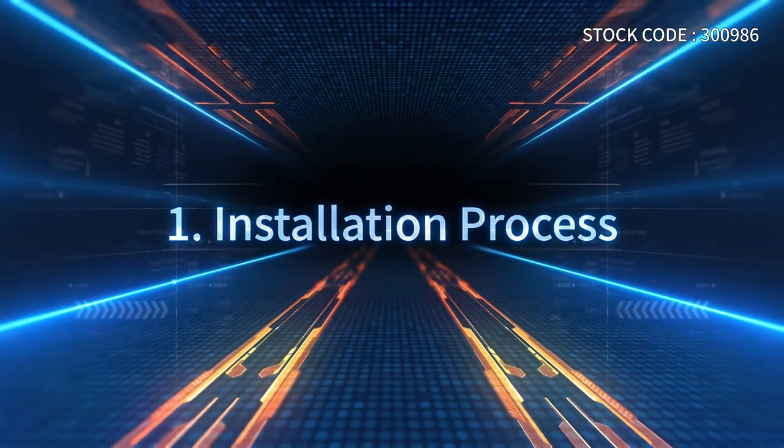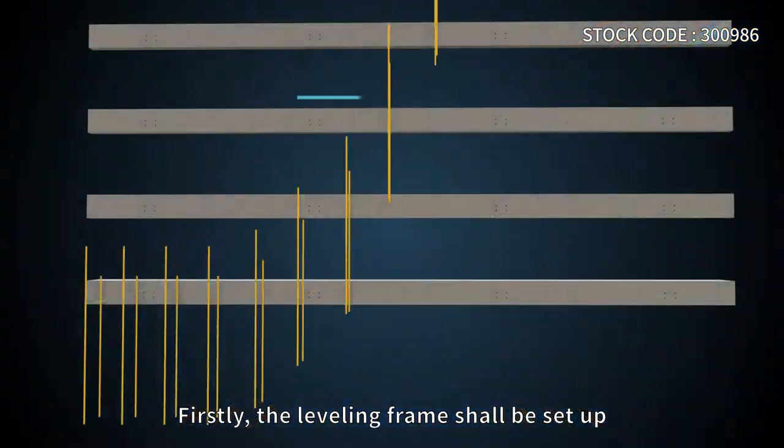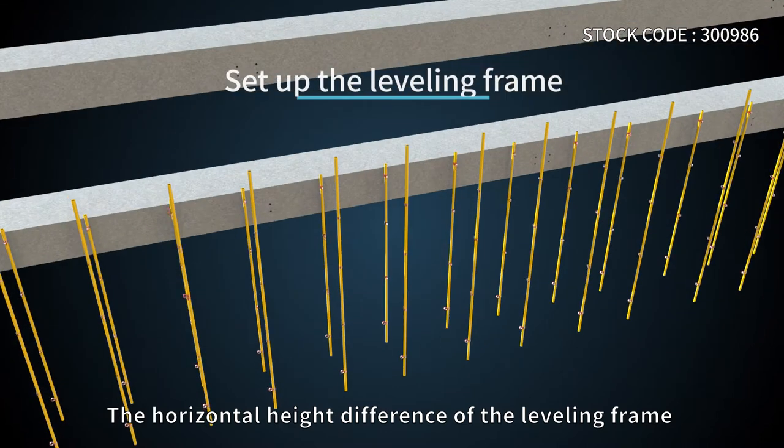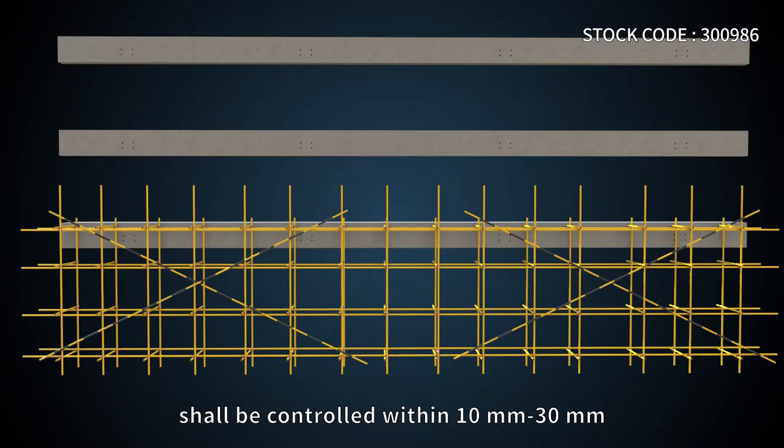Installation process: First, set up the leveling frame. The horizontal height difference of the leveling frame shall be controlled within 10 to 30 mm.